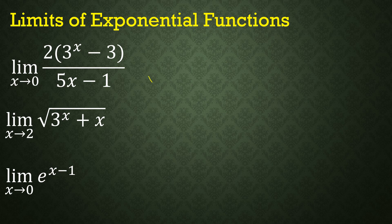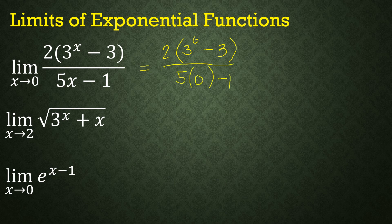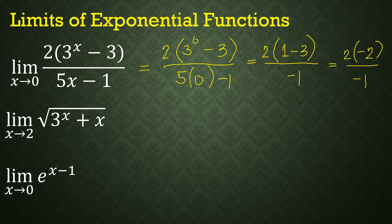We can also evaluate quotients as long as we apply the exponential rules. For the first: the limit of (2 × 3^x - 3) / (5x - 1) as x approaches 0. Substituting x = 0: (2 × 3^0 - 3) / (5 × 0 - 1) = (2 × 1 - 3) / (0 - 1) = (2 - 3) / (-1) = (-1) / (-1)... giving a final answer of 4. Wait — that works out as 2 × (-2) / (-1) = 4.